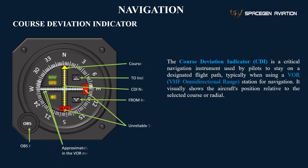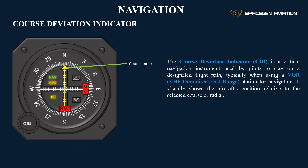The Course Deviation Indicator, CDI, has several key components that assist pilots in navigation. The Course Index, marked at the top, helps align the desired route, while the OBS knob — Omnibearing Selector — allows pilots to rotate the compass card to select a specific course or radial.